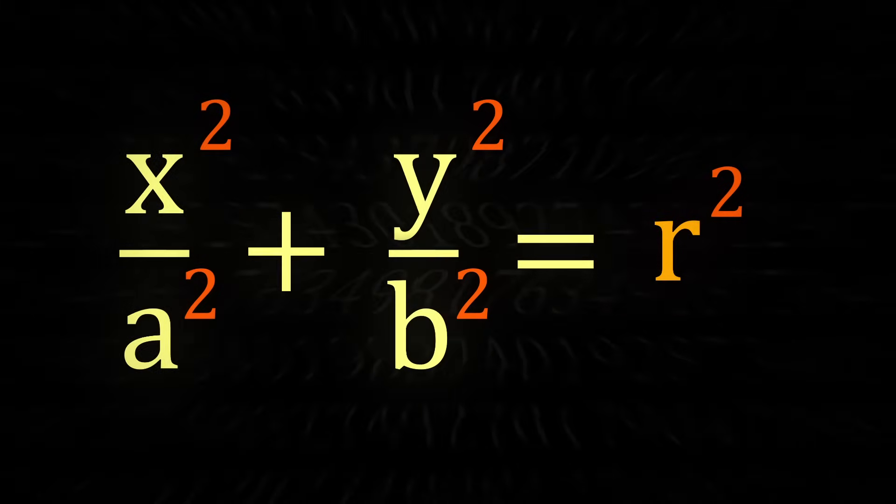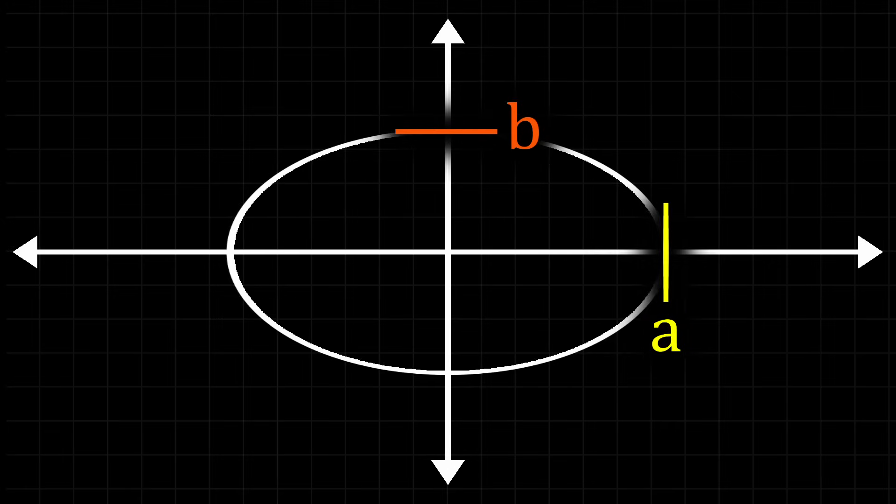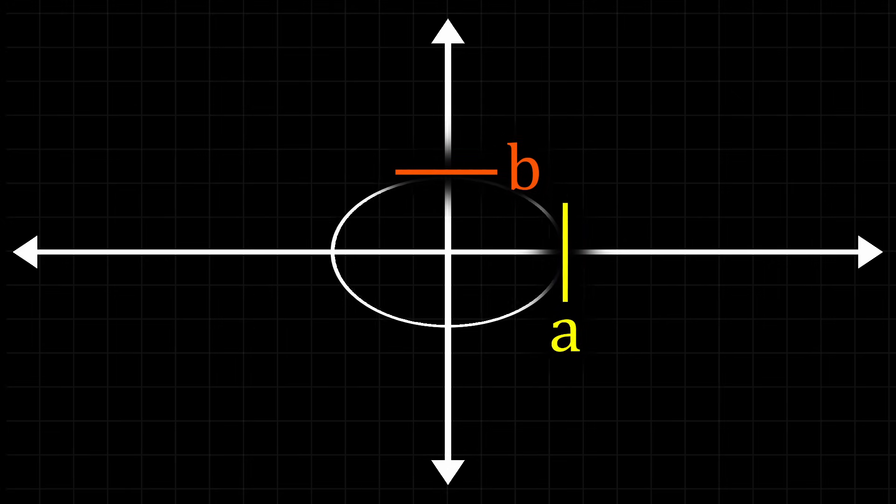a and b scale x and y multiplicatively, meaning that when a is multiplied by 2, then the x is twice as long. This looks similar to an egg.